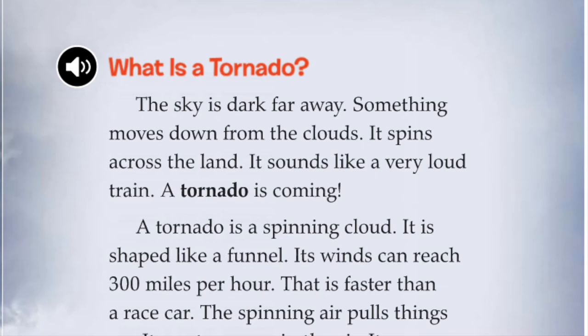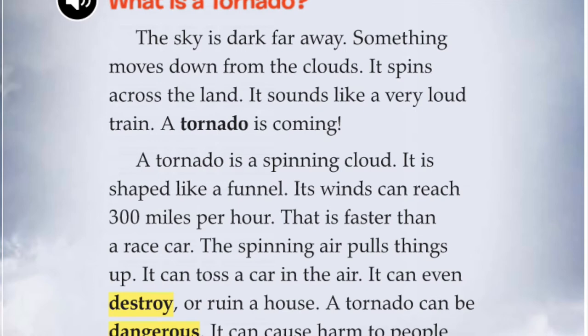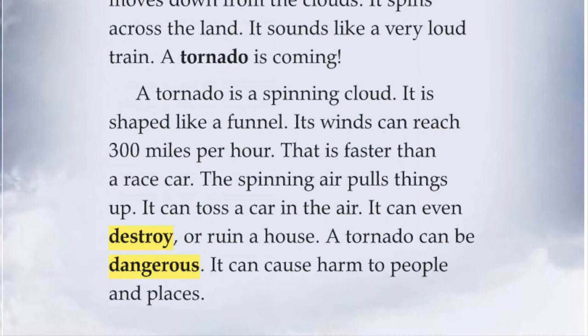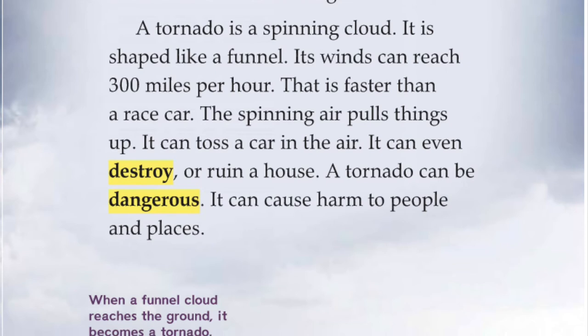A tornado is a spinning cloud. It is shaped like a funnel. Its winds can reach 300 miles per hour — that is faster than a race car. The spinning air pulls things up. It can toss a car in the air. It can even destroy or ruin a house. A tornado can be dangerous. It can cause harm to people and places.